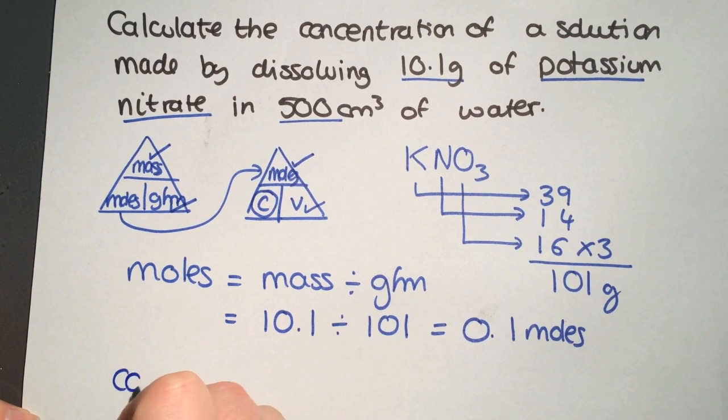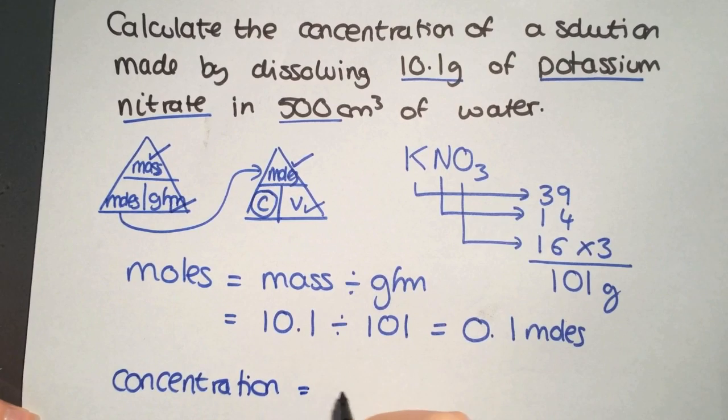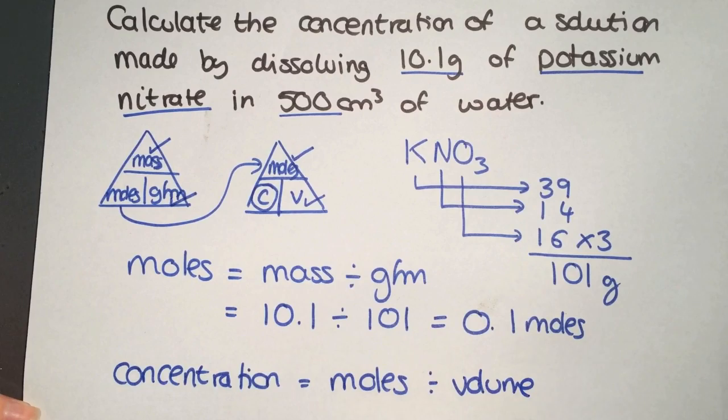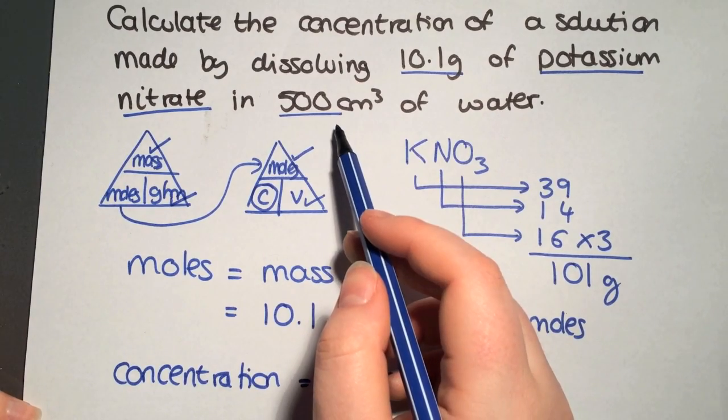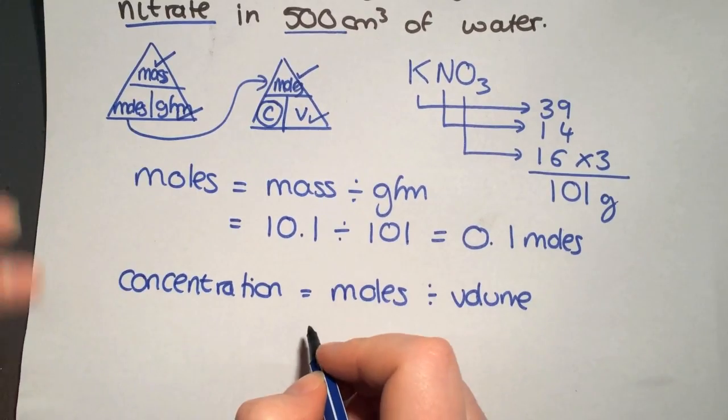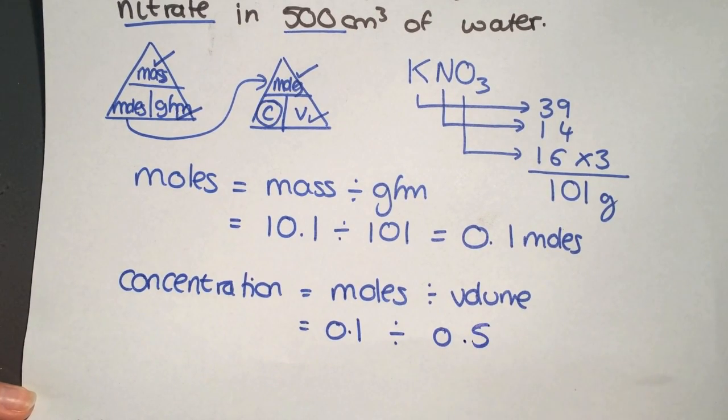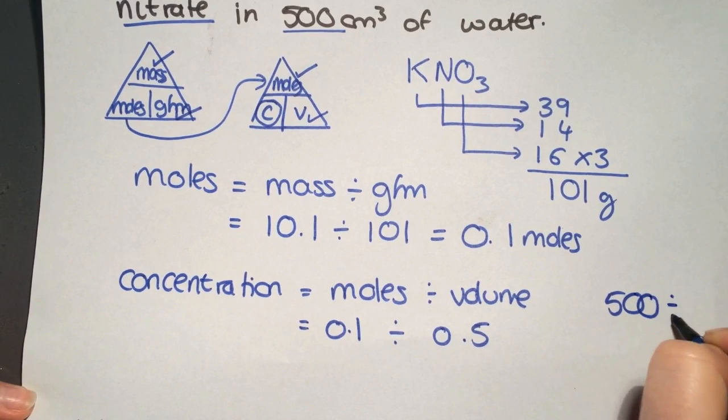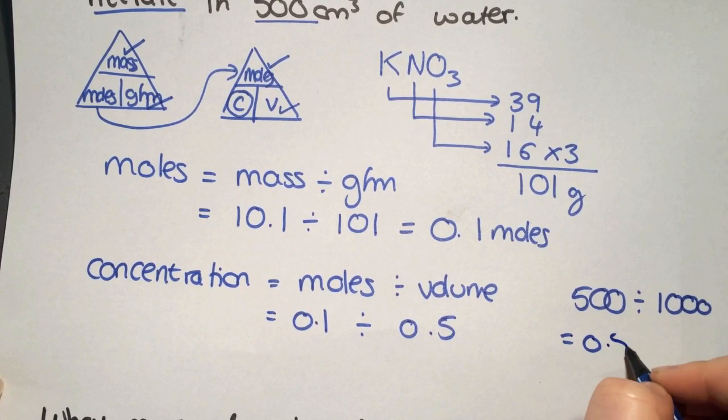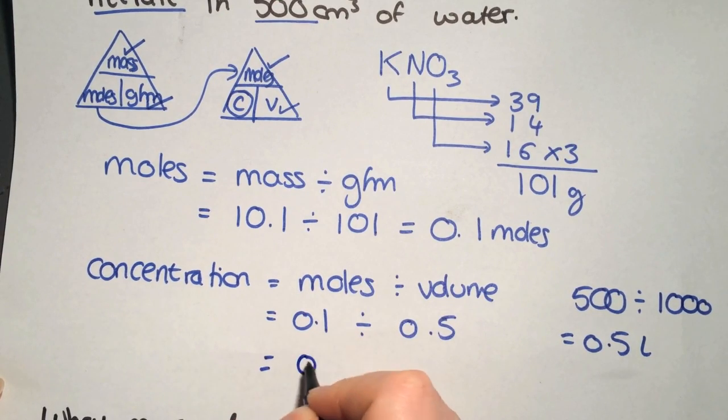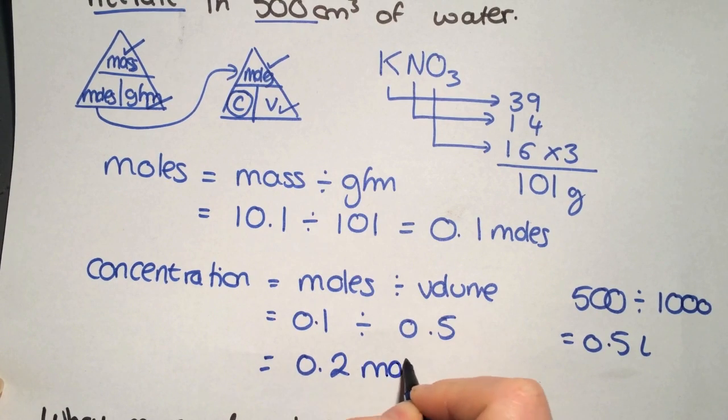Concentration equals moles divided by volume. It's important to change your volume into liters. You have 0.1 moles divided by 0.5 (500 divided by 1000 equals 0.5 liters). This gives you a concentration of 0.2 moles per liter.